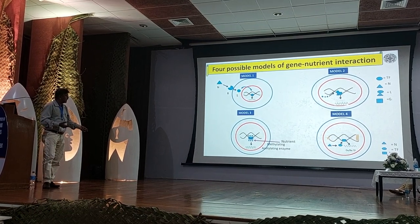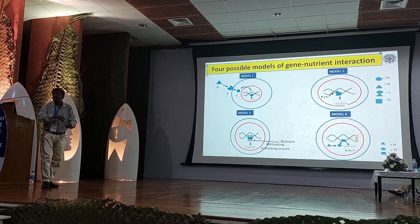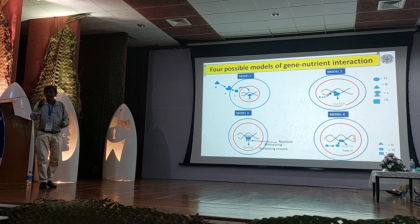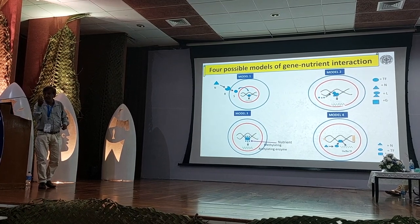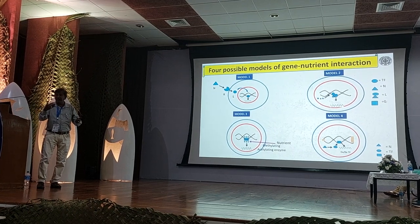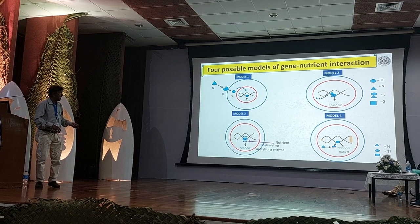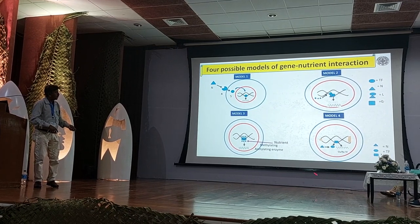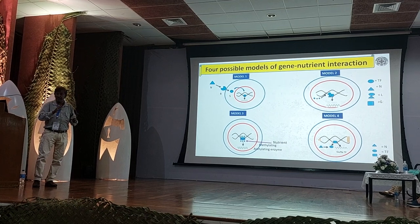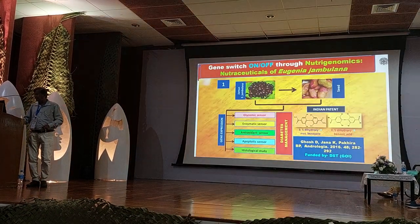The third model is that the nutrient directly reaches methylation, acetylation, carboxylation, and phosphorylation of the histone and DNA of the particular gene at the nucleosome, thereby changing gene expression at the embryonic level — which is part of epigenetics. The fourth model is that the nutrient can alter the oxidation-reduction process of transcription factors, by which gene expression may also be altered.